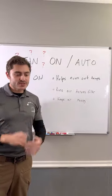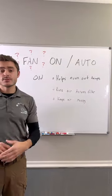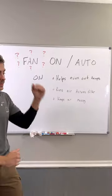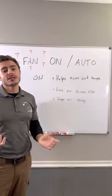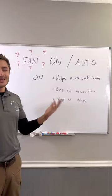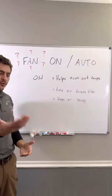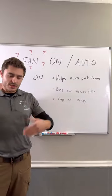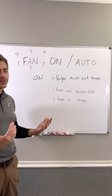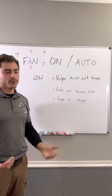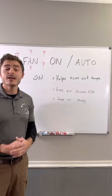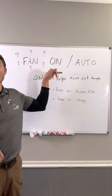If you have an upstairs and downstairs that is cooled by one system, typically the upstairs is going to get crazy hot. If you turn the fan to the on position, it's going to help mitigate that a little bit. Or if you have rooms that don't seem to be even with each other temperature-wise, that'll help a little bit. It's not going to fix poor ductwork or poor system design, but it is a little bit of a crutch you can fall on to help with some of that.